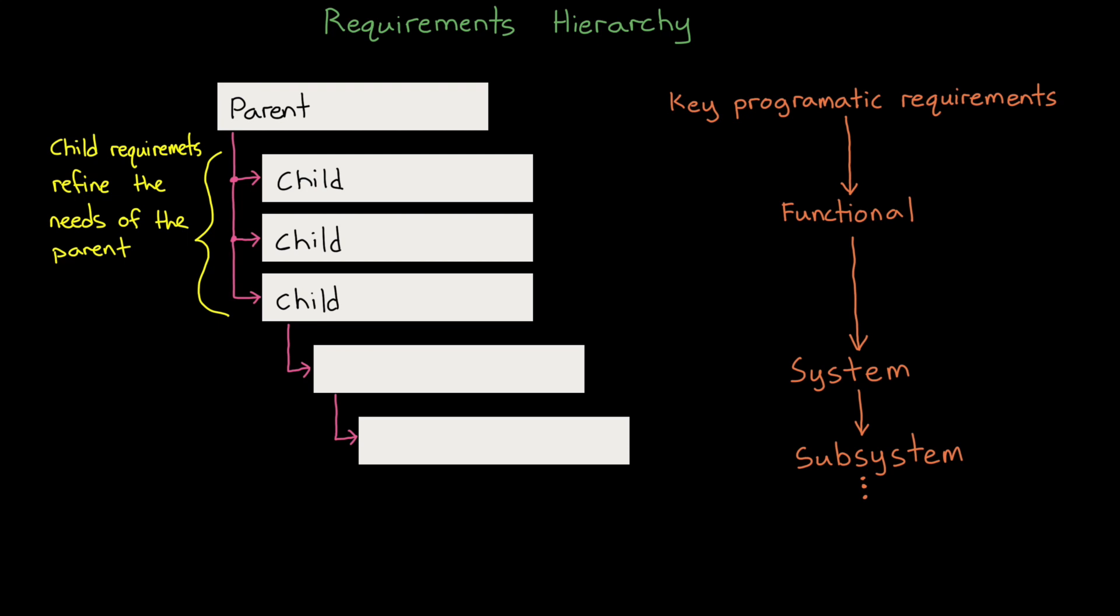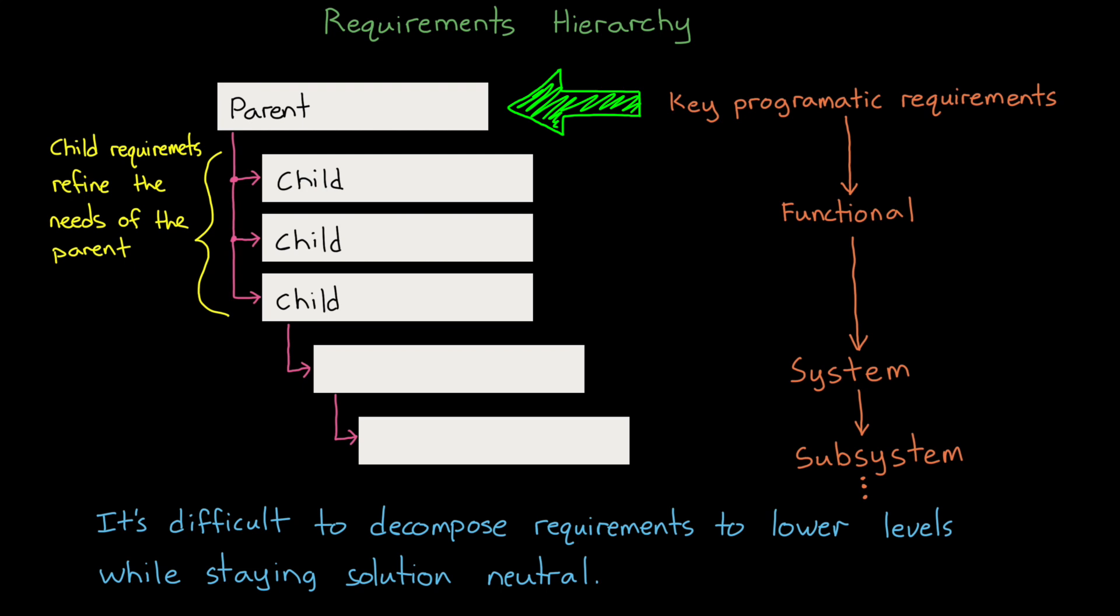Now, you might be thinking, wait a second, I thought you said requirements don't specify implementation. Then how can we develop requirements for the lower levels without having an implementation? Well, there's a difference between forcing an implementation through a requirement and defining the needs of a particular chosen implementation. Some design work and implementation details need to be determined in order to continue refining the requirements. So we can think of it as an iterative approach where the high level requirements allow the design team to investigate and choose a specific concept to pursue. And once we have a concept, we can write lower level requirements specific to that concept, which allows the design team to further refine the implementation.